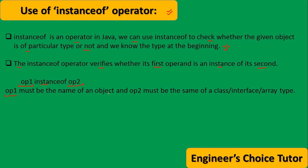op1 must be the name of an object, and op2 must be the name of a class, interface, or array type. Is it clear?